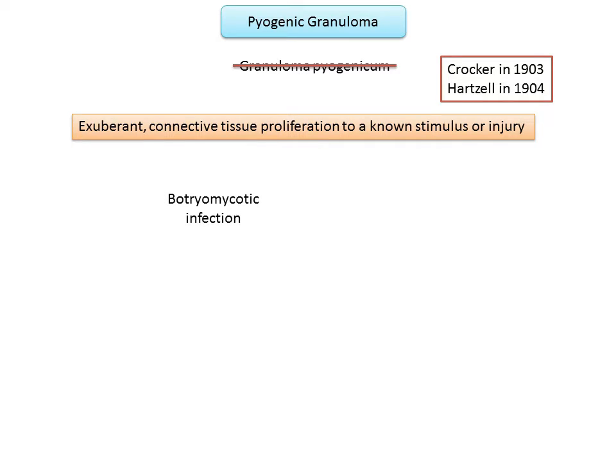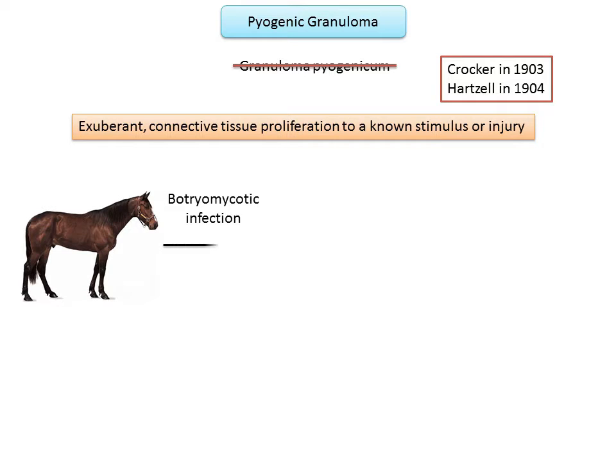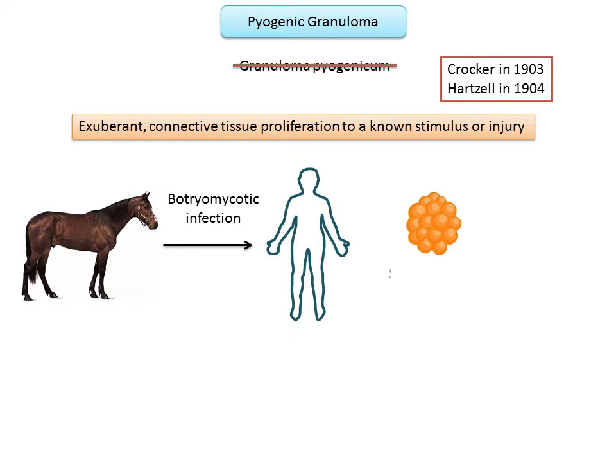Pyogenic granuloma was originally believed to be a botryomycotic infection. Botryomycosis is a chronic bacterial infection which manifests clinically as tumors or plugs which drain small white-colored granules, similar to a mycetoma. It was thought that this botryomycotic infection was transmitted from horses to men.